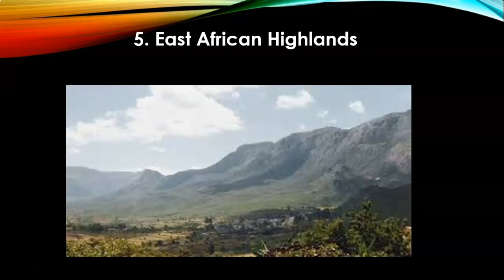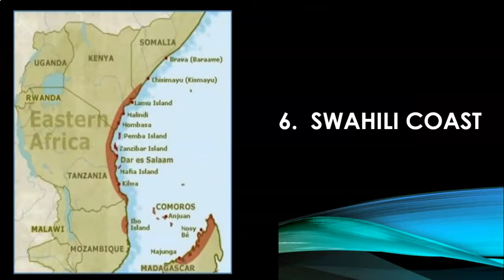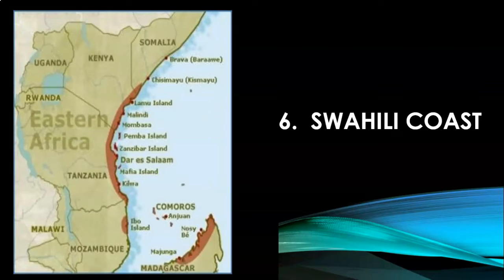Swahili Coast. The Swahili Coast is located along the shore of East Africa. It stretches about 1,610 km along the Indian Ocean from Somalia to Mozambique. It was the region where African communities created a unique culture referred to as Swahili culture. The people of this coast are also called Swahili.